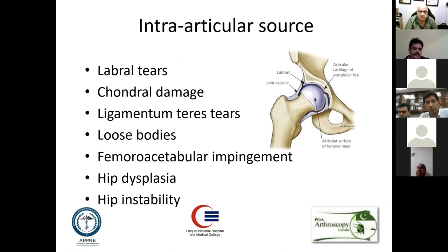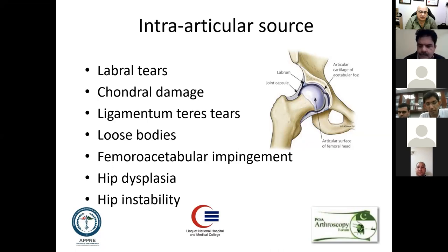The first component is the sources of pain or problems from inside the joint. The second is an extra-articular component which includes the peri-articular part. The third is a completely separate area — a referred sort of pain which gives mimicking pain inside your hip joint.